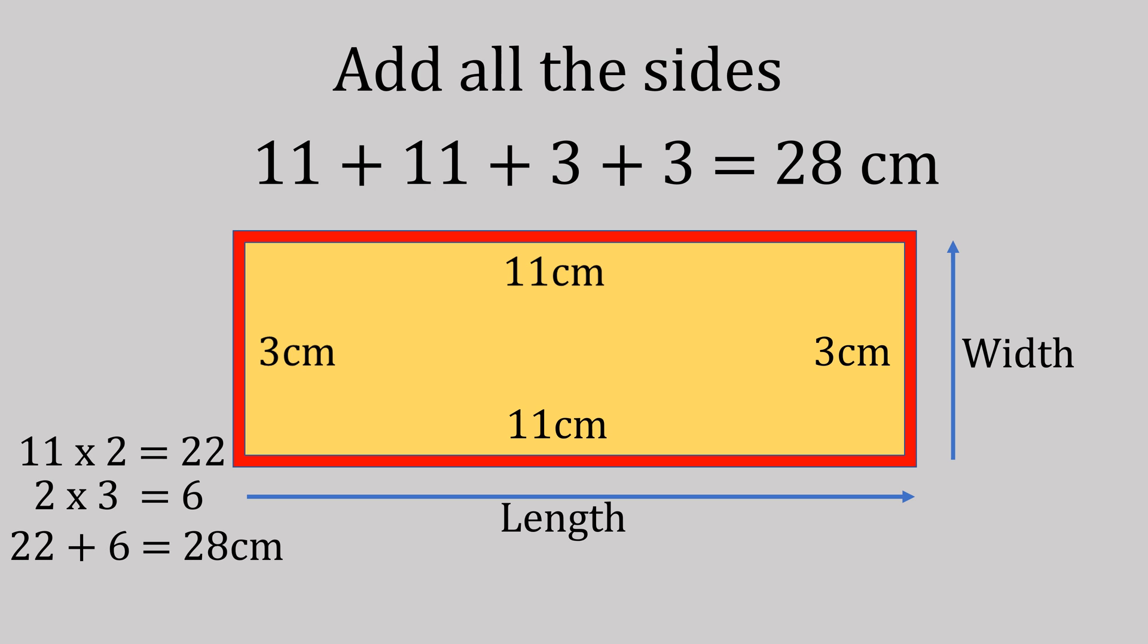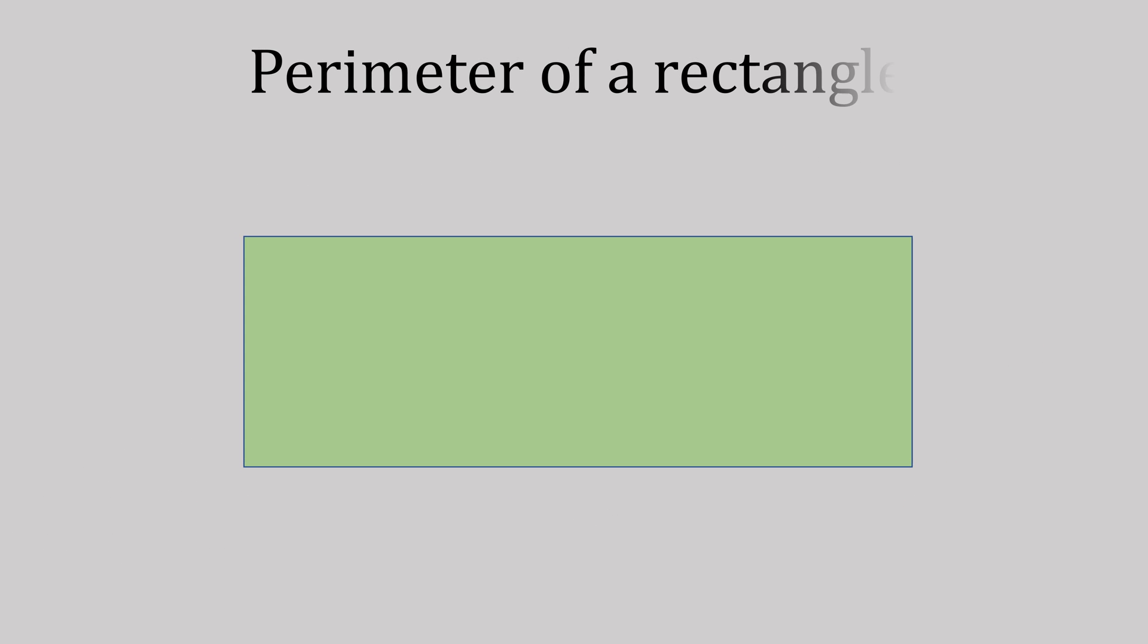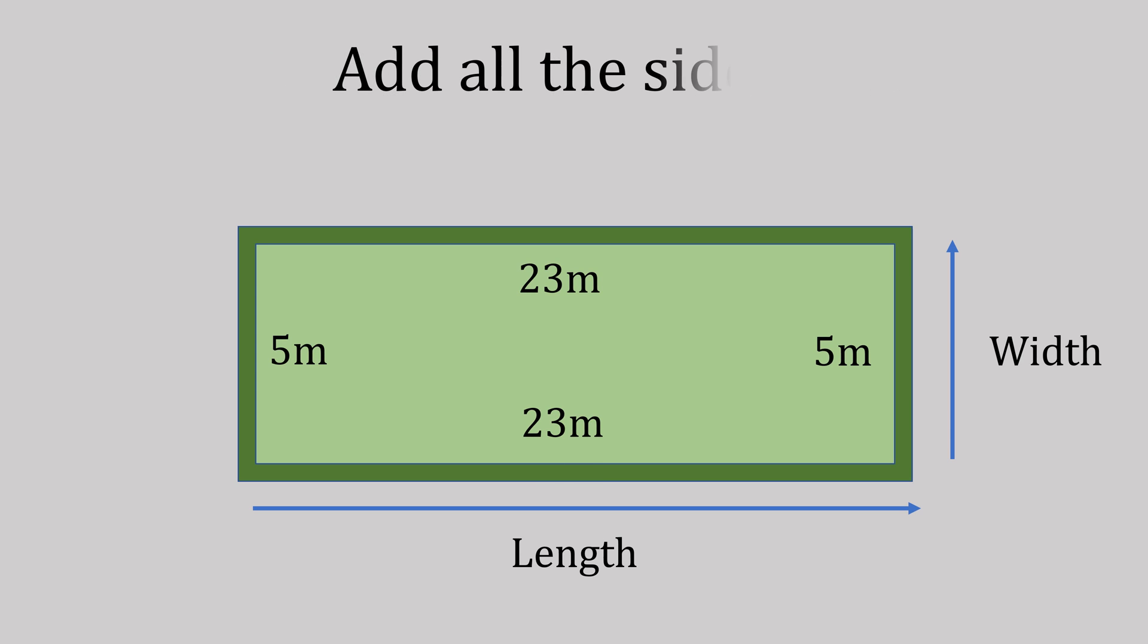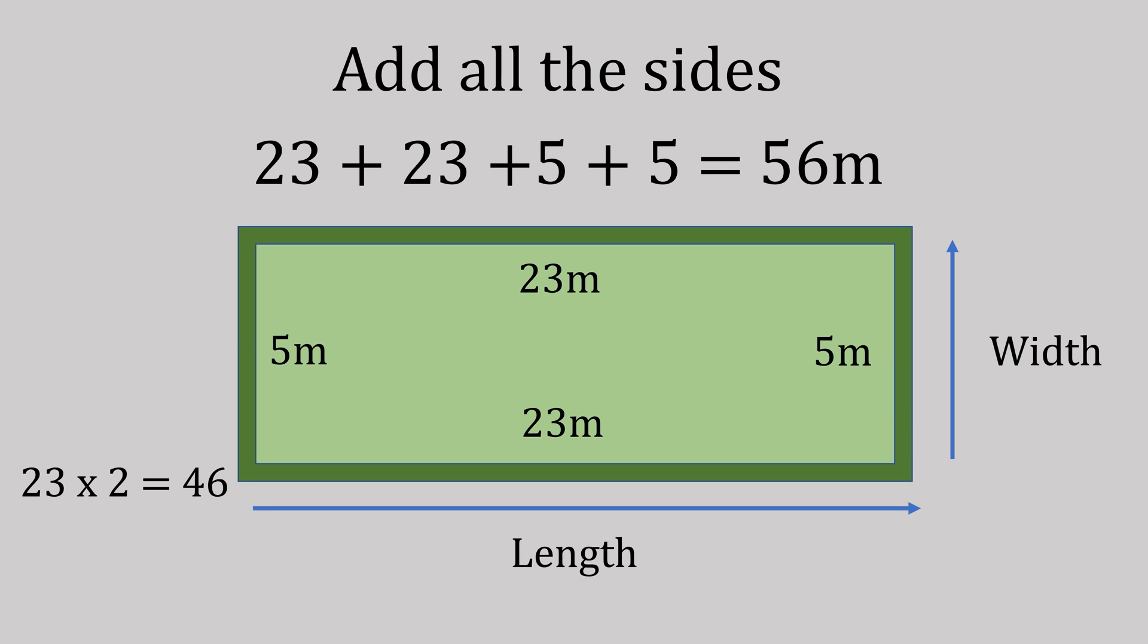So let's have another perimeter. Our measurements this time are 23 and 5. So 23 plus 23 plus 5 plus 5 gives us 56. Or we do 23 times 2 giving us 46, 5 times 2 gives us 10, add them up gives us 56.